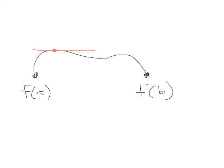Today we're going to learn about the mean value theorem. The mean value theorem is basically an extension of Rolle's theorem. The difference being that f of a does not have to equal f of b. So for Rolle's theorem we prove a slope of 0, but for the mean value theorem we're going to prove any slope, or a more specific slope. So let's take a look at it.